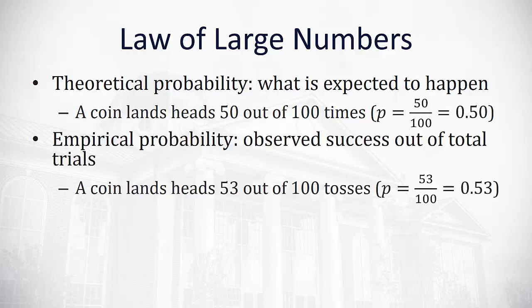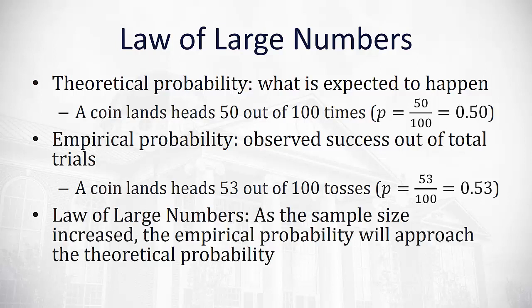The empirical probability would be the observed successes out of a total number of trials. Here we'd actually flip the coin 100 times and record how many heads. Maybe we get 53, so our empirical probability of this sample was 53 out of 100, or 0.53. Notice the empirical probability is close to the theoretical — that's the idea behind the law of large numbers. As the sample size increases, the empirical probability gets closer and closer to the theoretical probability. If we flip the coin 1,000 times, we'd expect our decimal to get even closer to 0.5. That's the law of large numbers.